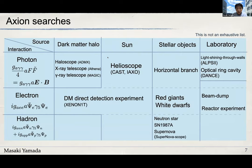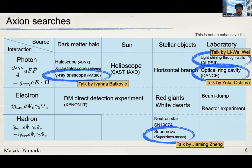The axion can also be generated inside stellar objects like the sun, so a helioscope can search for solar axions. Those experiments will be explained in detail later in this session, so I will not explain them here.